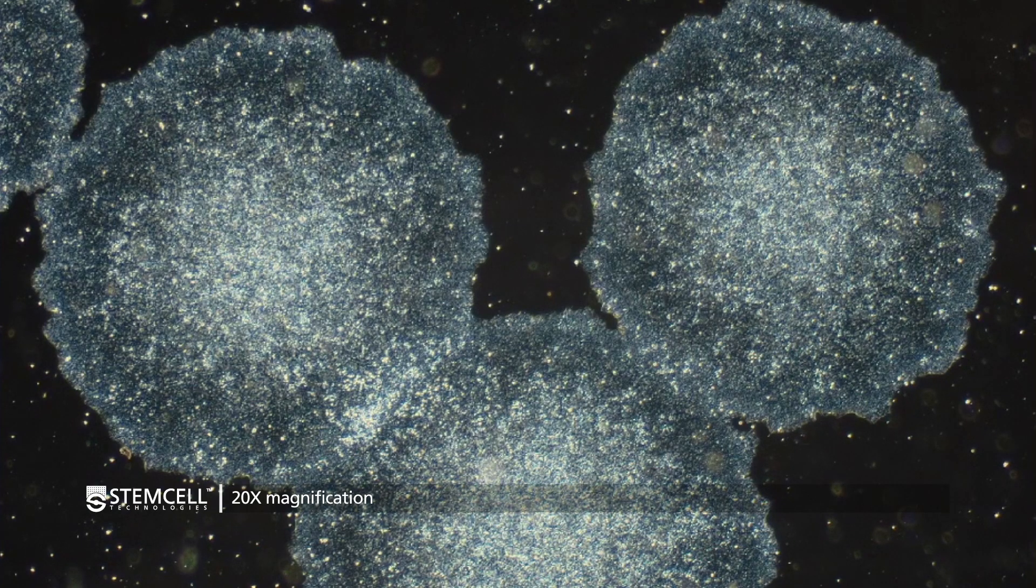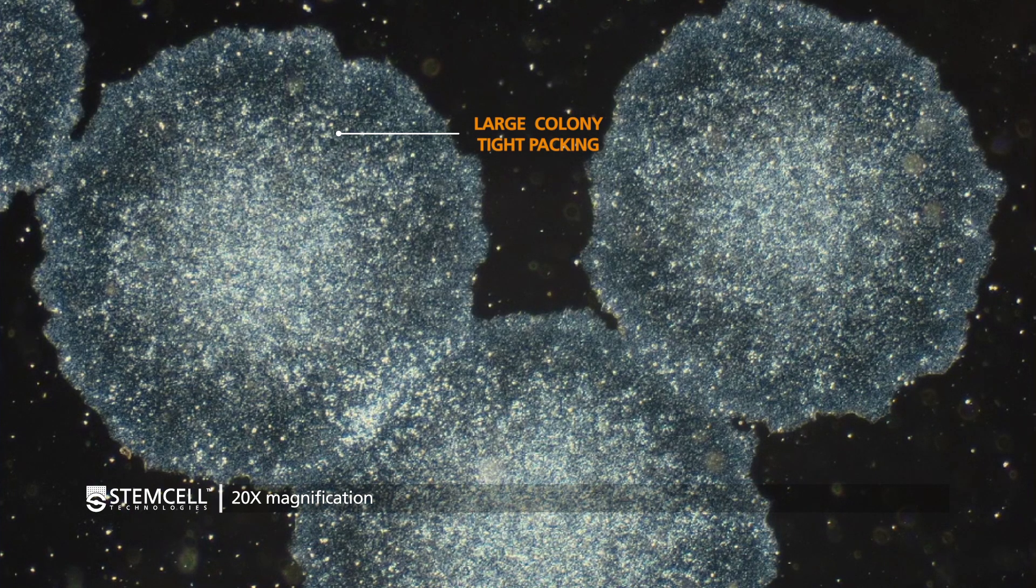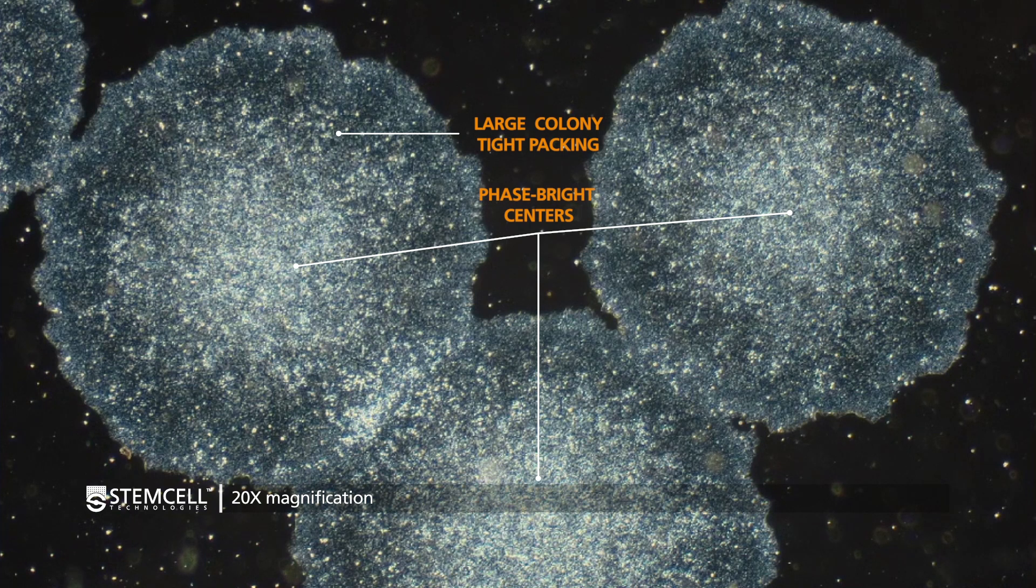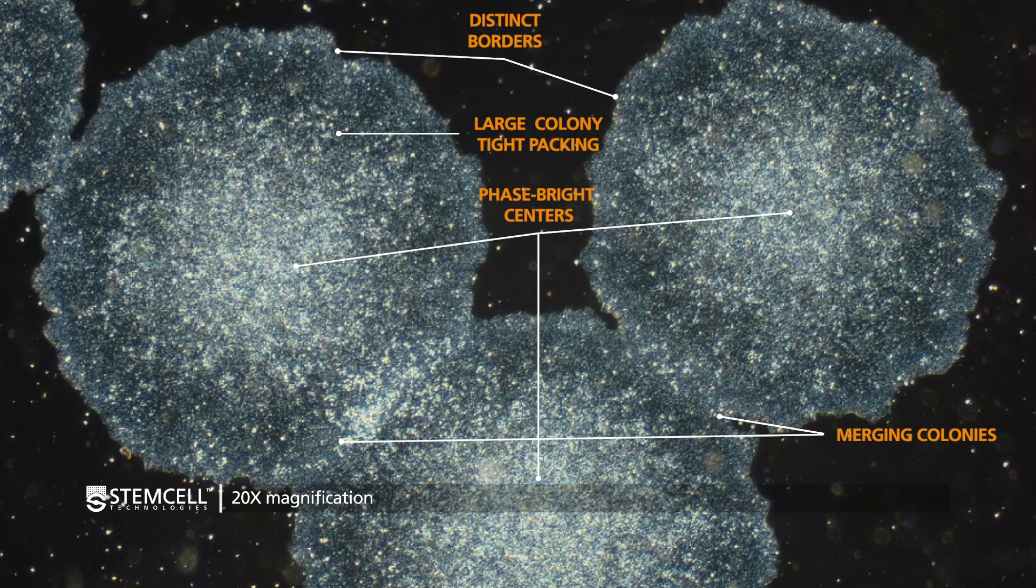At the time of passage, PSC colonies should be relatively large, cells should be tightly packed, exhibit phase brightness at the center of the colony due to multi-layering, and have a distinct border. It is also normal to see colonies merging at this stage.